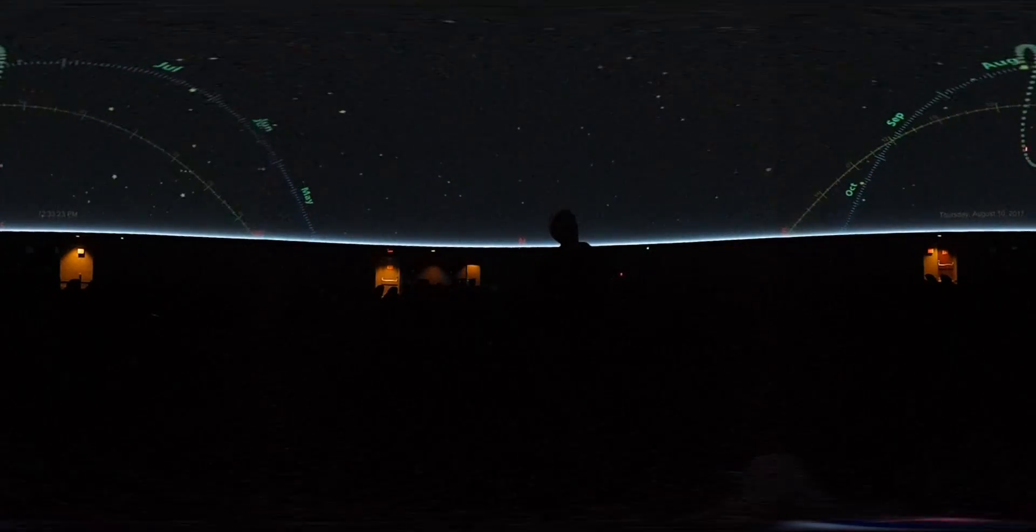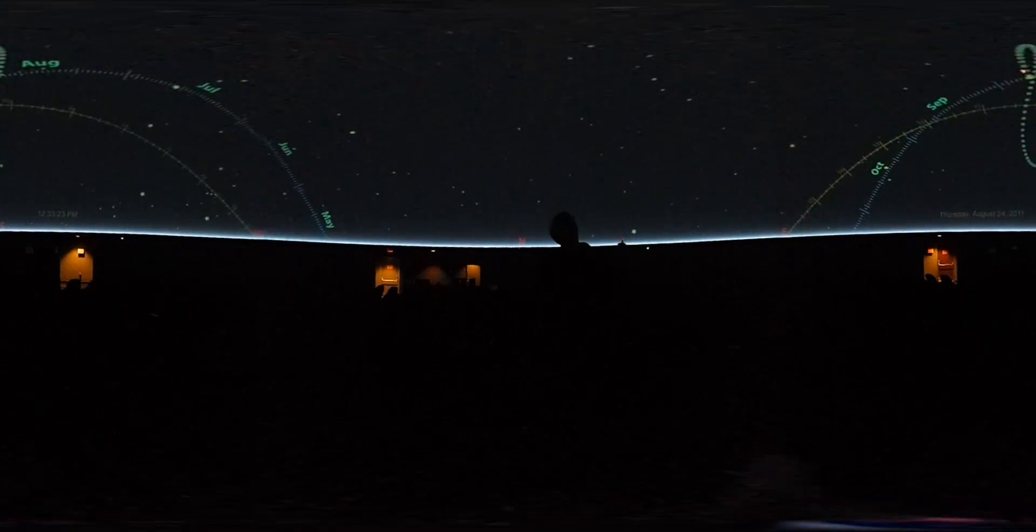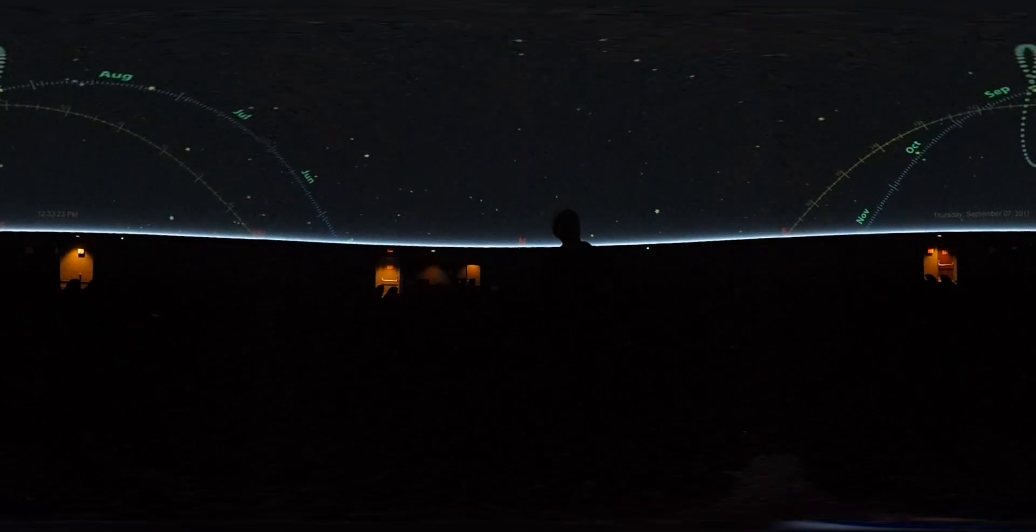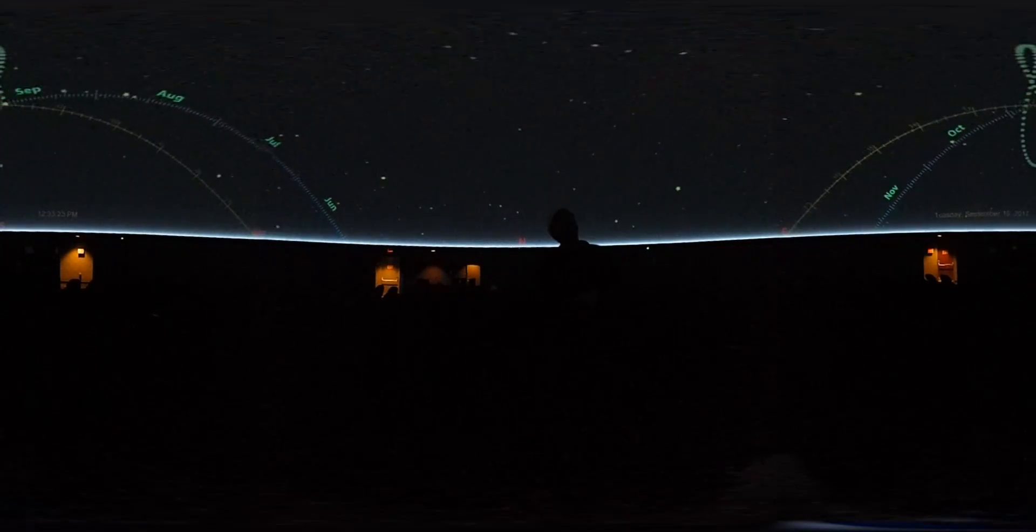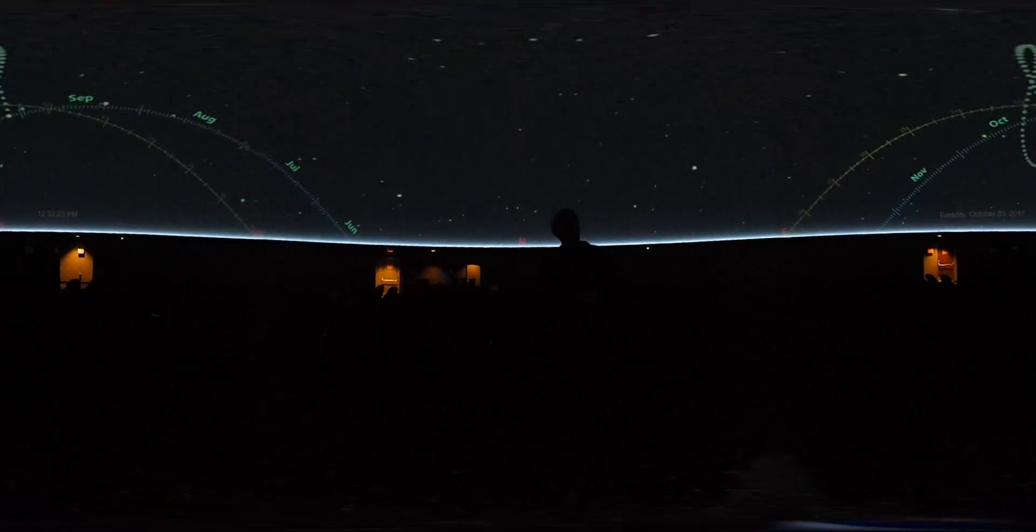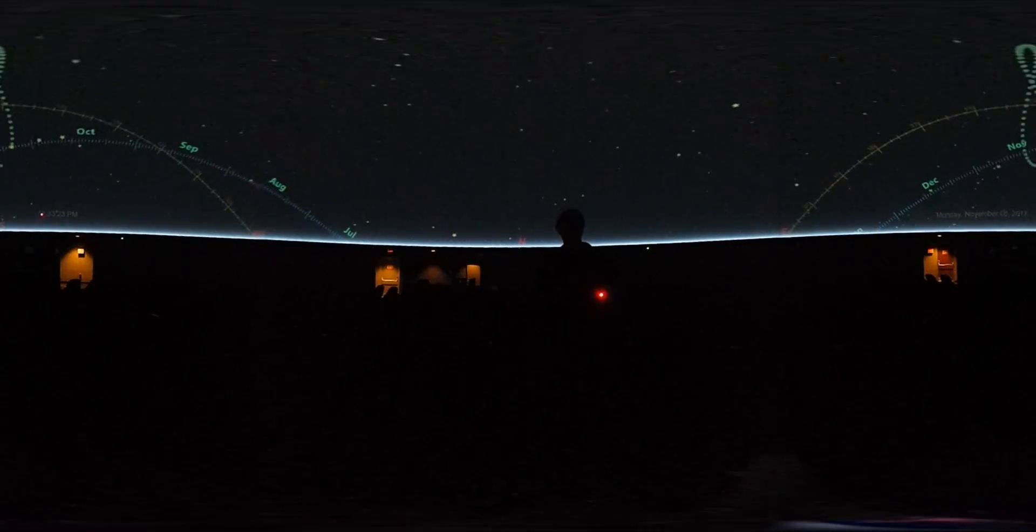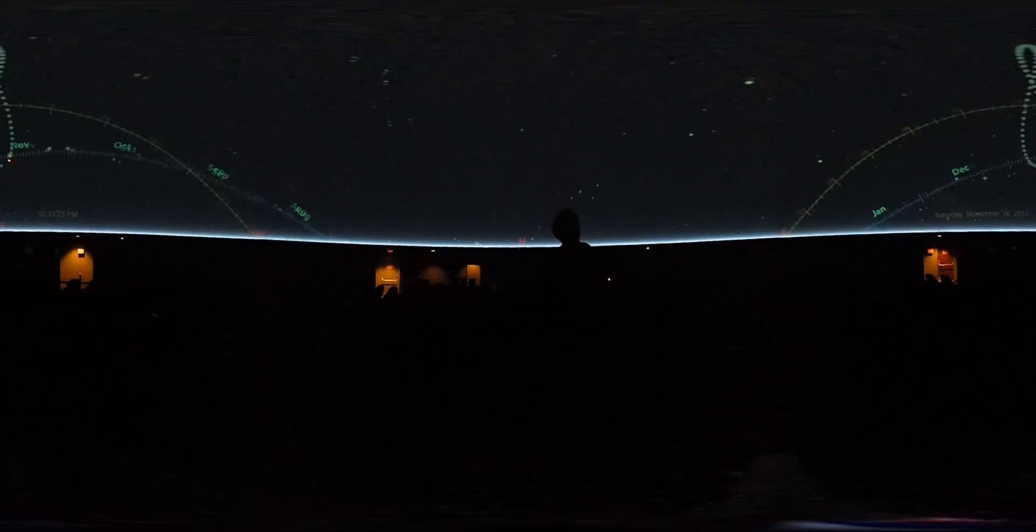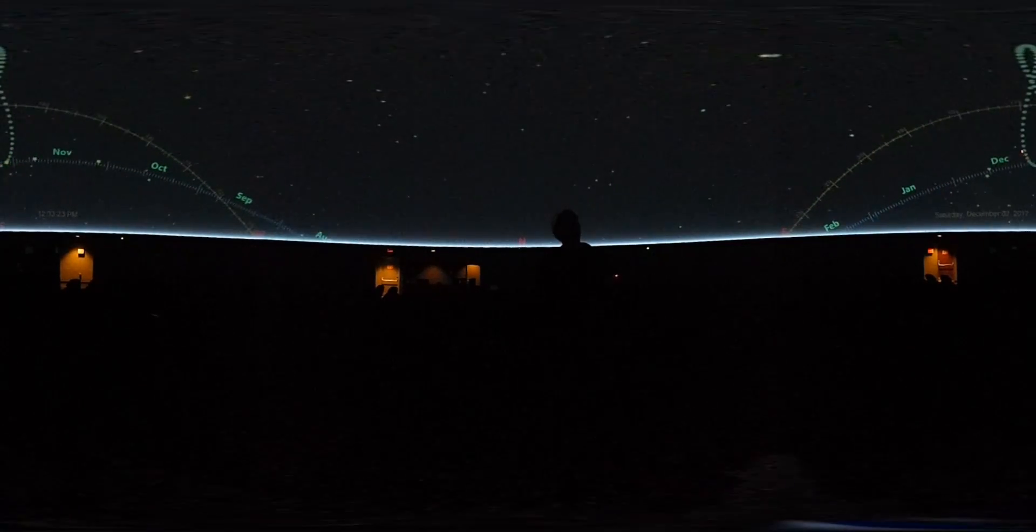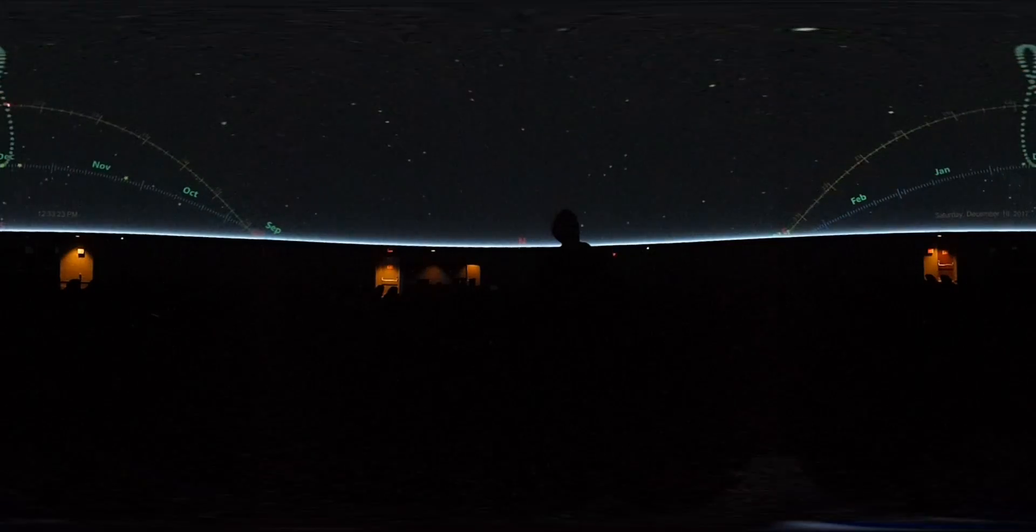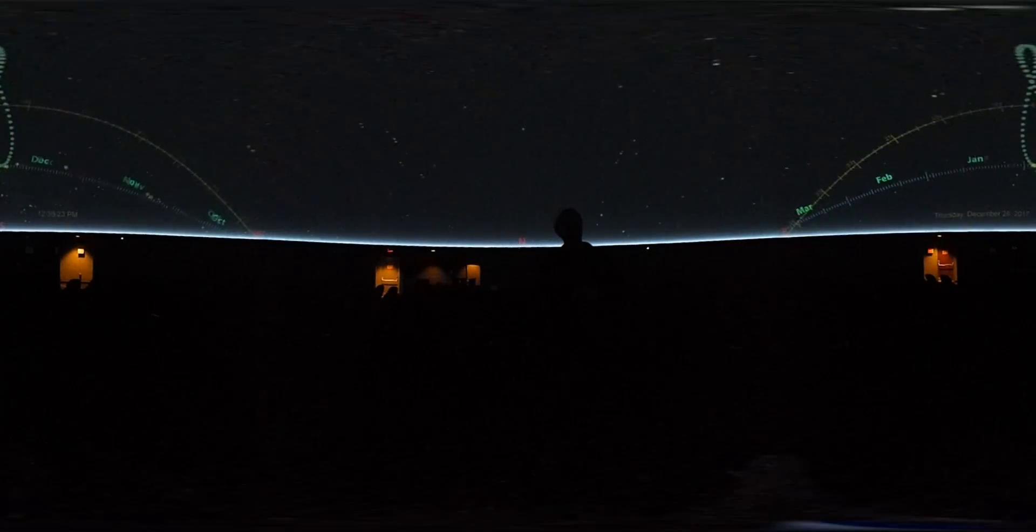So what we're seeing here is the path called the analemma that the sun would make if we took a picture of the sky at the same time every day. And so if we look around noon, actually 12:33 is what we're seeing here, we're snapping it every single day throughout the year, we get this figure eight shape known as the analemma.